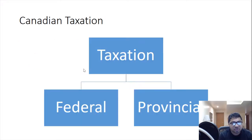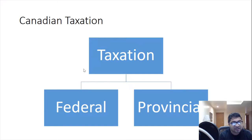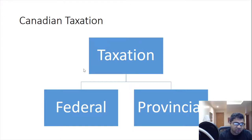In Canada, taxation works at two levels: federal level and provincial level. Federal level means taxation is done on a nationwide basis, and it is also done at a provincial basis. For example, I stay in the province of Alberta in Calgary, so I am taxed twice — once in Alberta and once federally.